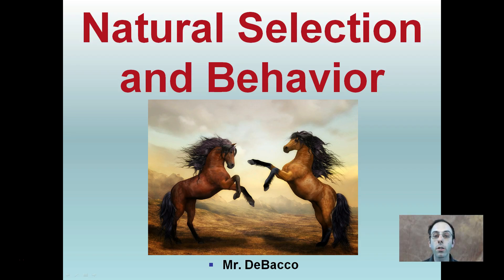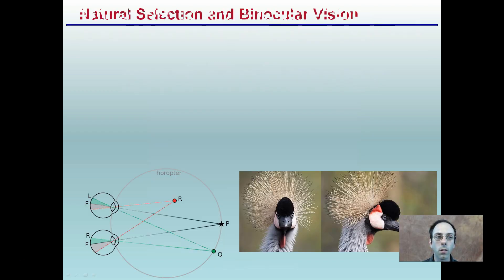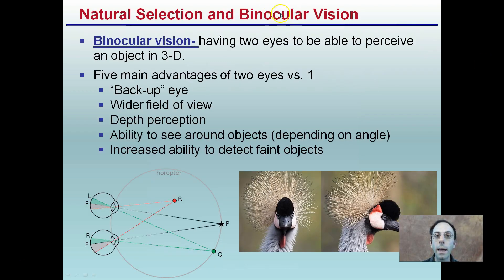Here we're going to look at natural selection and how it relates to behavior. Starting out, natural selection and binocular vision. Behavior in this sense — we're looking at how an animal has its eyes oriented. Binocular vision is having two eyes and being able to perceive an object in 3D.